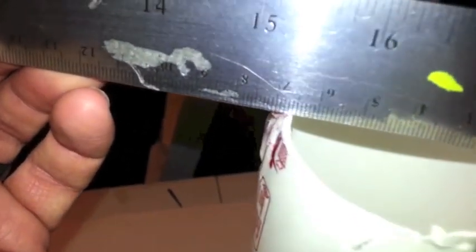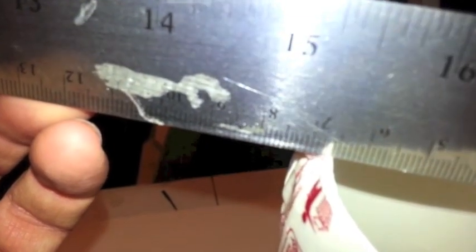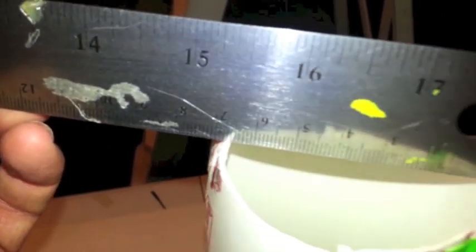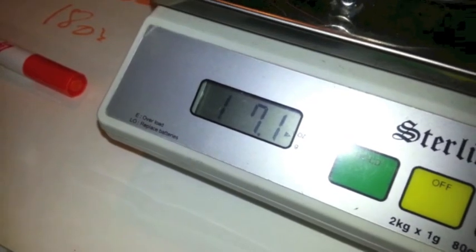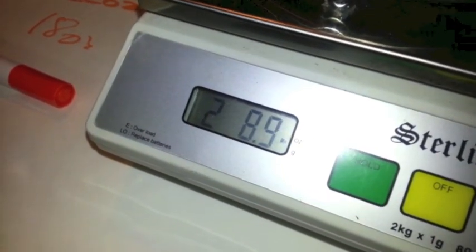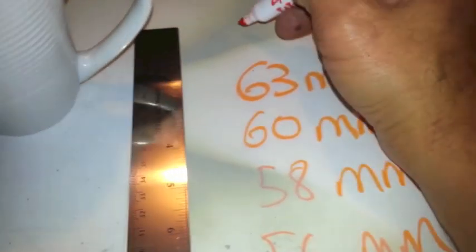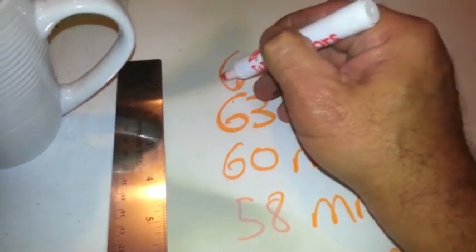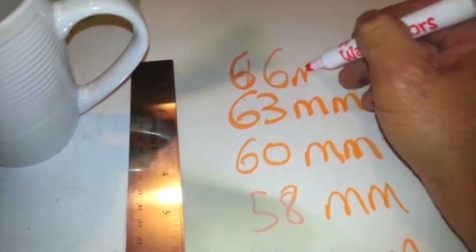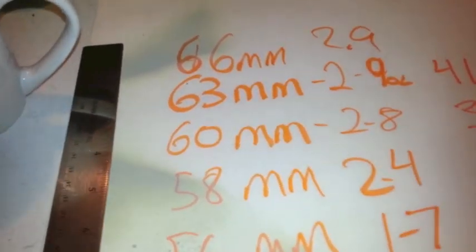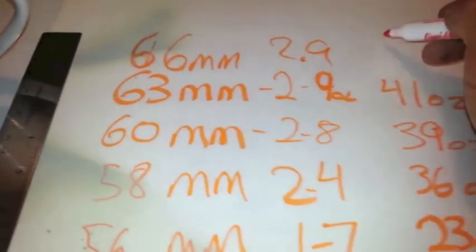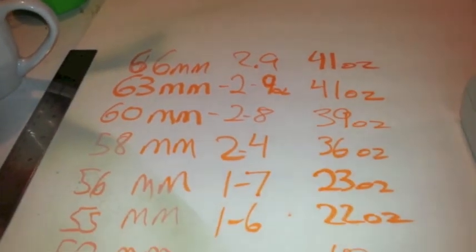Alright, we're at 66 it looks like, 66 or 67. Let's see what that does. That's almost 70mm. Alright, we're up to 2.9 now. Oh, I'm sorry, 66 millimeters, 2.9. That's what I found in the beginning.